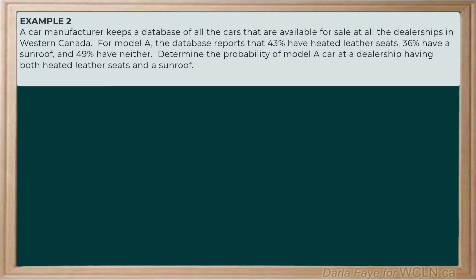Let's squeeze in one more example. A car manufacturer keeps a database of all cars available for sale at dealerships in Western Canada. For Model A, the database reports that 43% have heated leather seats and 36% have a sunroof. Furthermore, 49% have neither heated leather seats nor a sunroof. Determine the probability of a Model A car at a dealership having both heated leather seats and a sunroof.